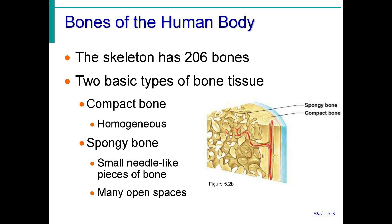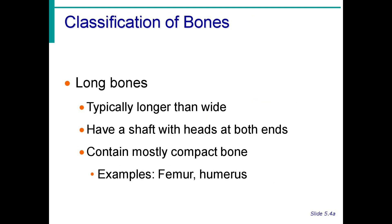The skeleton has 206 bones and two basic types of bone tissue: compact bone and spongy bone. Compact bone is homogeneous, while spongy bone has needle-like pieces with many open spaces. This is a misnomer — it is called spongy not because it is soft, but because it contains spaces in its trabecular plate. It is also known as cancellous bone.